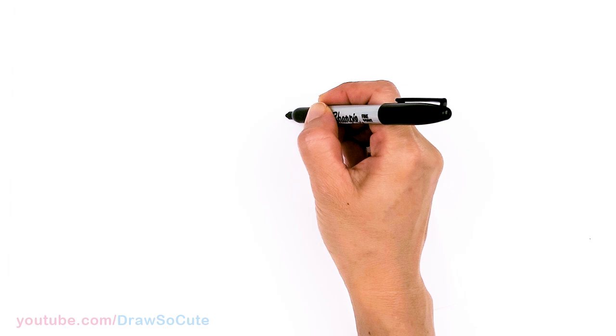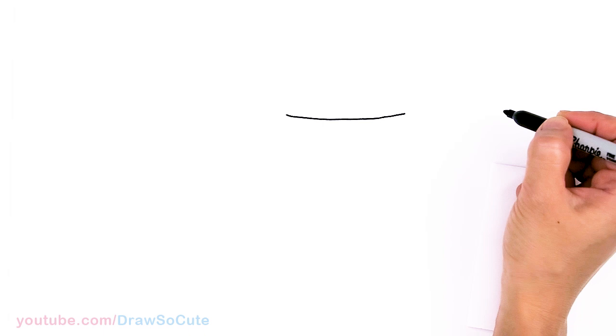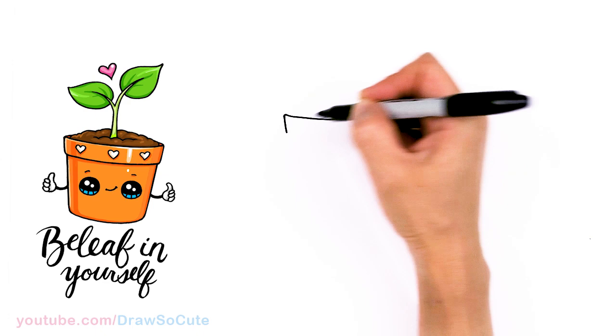To draw this cute pun art let's first start by drawing the pot. So I'm going to come right here and just draw a curve right across. It's just a soft curve and it's all up to you how wide you want your pot to be. So I'll say about that much for mine and then I'm going to come to the edge right here, kind of round it off a little bit and then give it a little angle.